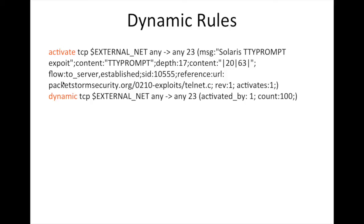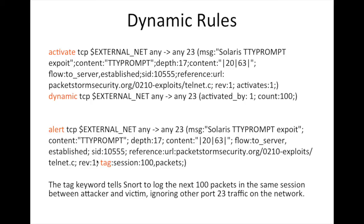The same behavior can be achieved using the 'tag' option. Instead of activate/dynamic, we use 'alert' with the 'tag' keyword: we alert on port 23 and log the next 100 packets. The tag keyword tells Snort to log the next 100 packets in the same session between attacker and victim, ignoring other port 23 traffic on the network.